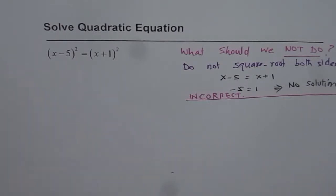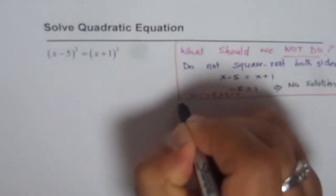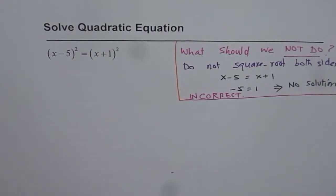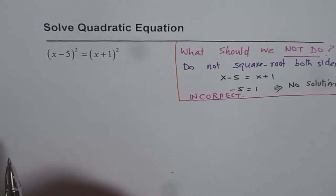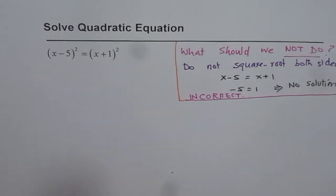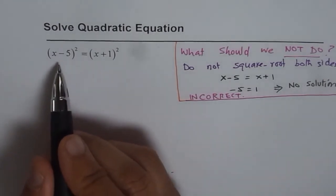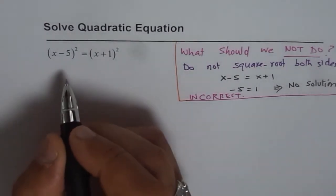Now, what should we do? What we should do here is expand, combine like terms, and then solve. We will expand this. Many ways to expand it. You could apply the perfect square formula, or you can apply FOIL or distributive property. Let's do them one by one.